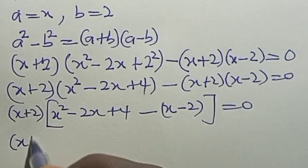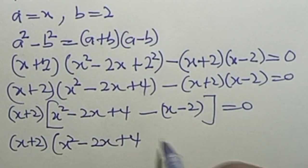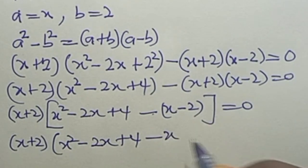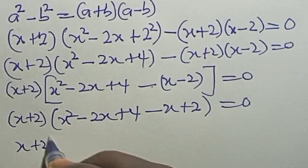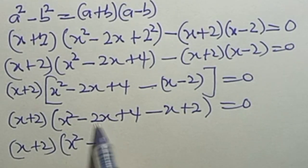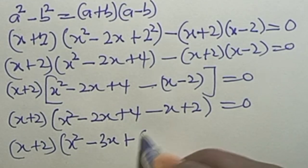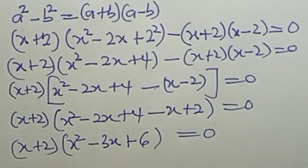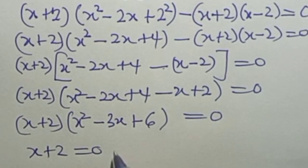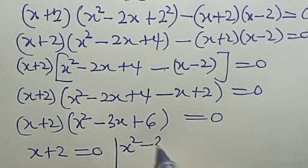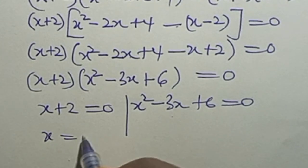We factor out (s + 2), leaving: (s + 2) times [(s squared minus 2s + 4) minus (s minus 2)] equals zero. Opening the bracket: s squared minus 2s minus s + 4 + 2 gives s squared minus 3s + 6. Applying the zero product rule: either s + 2 = 0 or s squared minus 3s + 6 = 0. From the first factor, s = minus 2.